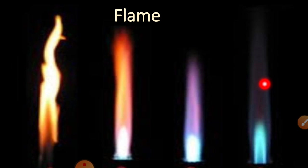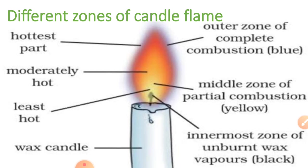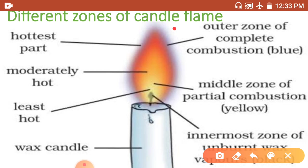Now we will look at the different zones of a candle flame. There are three zones: the outermost zone, the middle zone, and the innermost zone.